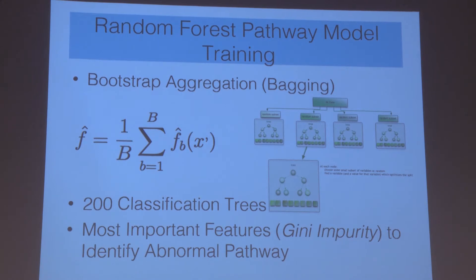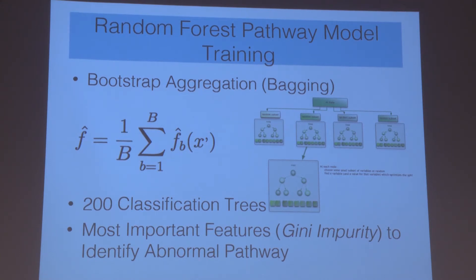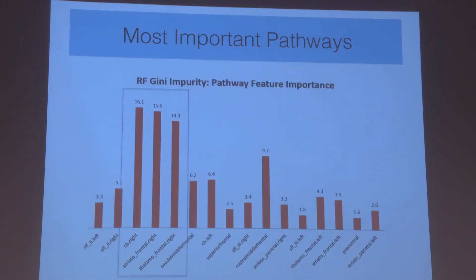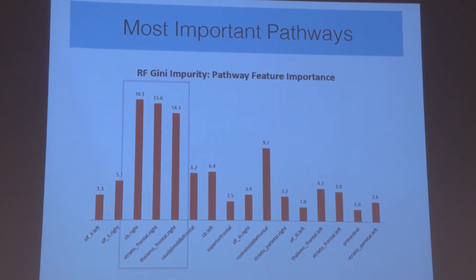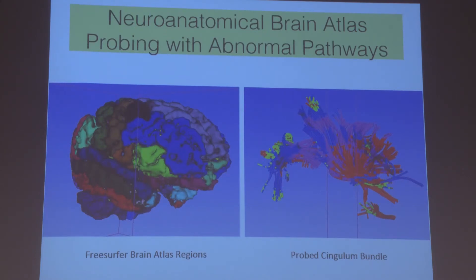To train our model, we used bootstrap aggregation, creating 200 weak-learner classification trees that contributed to an overall random forest prediction model able to differentiate between early-episode schizophrenia and healthy controls. The most important part of this process was identifying which features the random forest weighted most. Using the Gini impurity model, we identified which nodes received the highest weightage to find the most abnormal pathways. This revealed three specific pathways: the right cingulum frontal bundle, the right striatum frontal bundle, and the right thalamofrontal bundle.